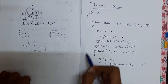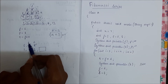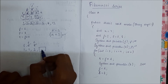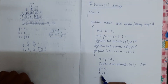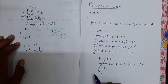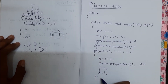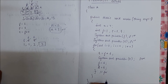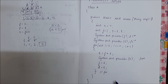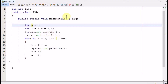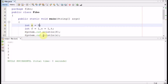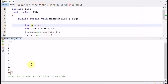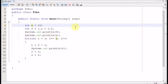When the loop runs again, t will be f plus s, so one plus two gives three. That is why we write these two update statements. Now we can finish the for loop. Let me run this program — for n equal to five I get five terms, and for n equal to ten I get ten Fibonacci numbers. If you like my videos, consider subscribing to my channel. Thank you.